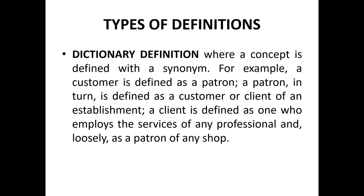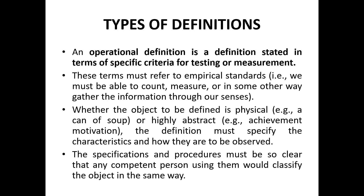The first definition is the dictionary definition — you should have a dictionary definition for your variable, concept, and construct. The second is operational definition, which is a very important thing in research. We must clearly state our operational definition. Whatever our concept, construct, or variable is — whether it is a latent construct or otherwise — you should define the operational definition of your concept and construct variable. This is an important task in research.